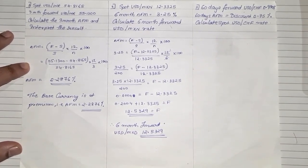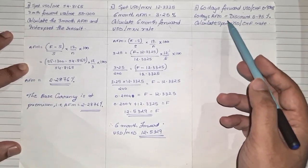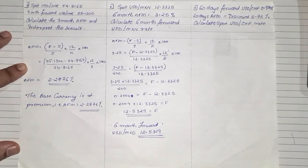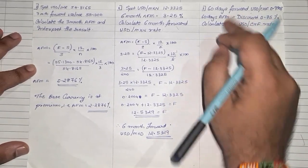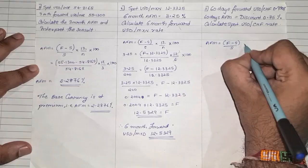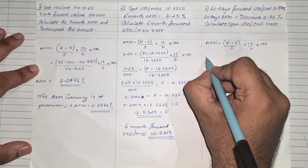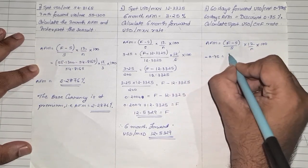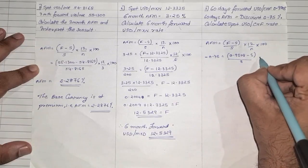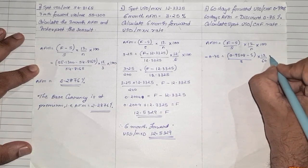In the third problem, the 60-day forward USD to CHF is given, along with a 60-day AFM at a discount of 0.75%, and they are asking you to calculate the spot price. Here forward is given and we need to find the spot rate. Using the same formula: AFM = (F minus S) upon S, into 12 upon N, into 100. Since it is a discount, AFM is negative 0.75. So: negative 0.75 = (0.9508 minus S) upon S, into 12 upon 60 days, into 100.